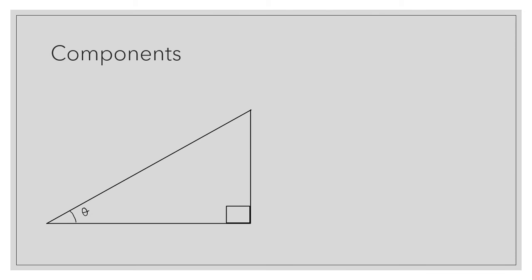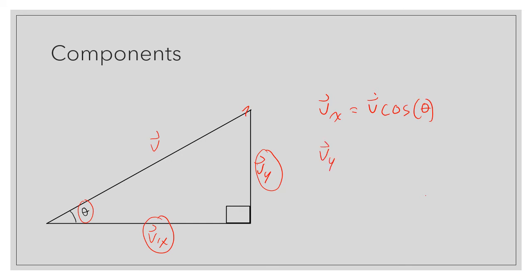Now I'm going to show you how vectors can be broken up into components. In a right-angled triangle, the vector will always be the hypotenuse. The angle theta comes from either the bearing or the standard angle of the vector, and that would be given in the question. The y-component is the vertical side and the x-component is the horizontal side. To find the values of these, you use trigonometry: Vx is equal to V cosine theta, and Vy is equal to V sine theta.